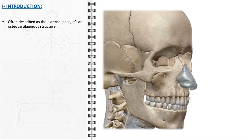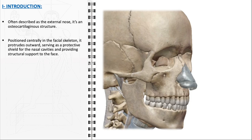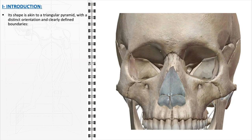The nasal pyramid, commonly referred to as the external nose, is a prominent osseocartilaginous structure that plays a crucial role in the anatomy of the facial skeleton. Located centrally on the face, it is composed of both bone and cartilage, contributing to its unique shape and strength. Its primary function is to act as a protective barrier for the nasal cavities, safeguarding them from external harm and injury. The shape of the nasal pyramid closely resembles a triangular pyramid.